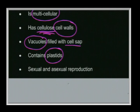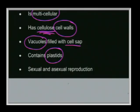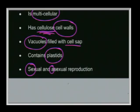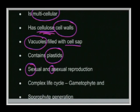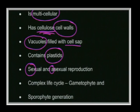Plants may reproduce sexually — sexual reproduction refers to sex cells or gametes — or asexually. The prefix 'a' means not, so asexual reproduction means no gametes are involved, and there are different ways in which plants reproduce asexually. Plants also have complex life cycles; all plants have a gametophyte generation and a sporophyte generation, which we'll discuss in more detail later.